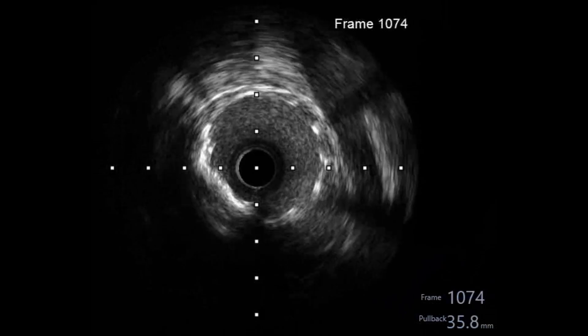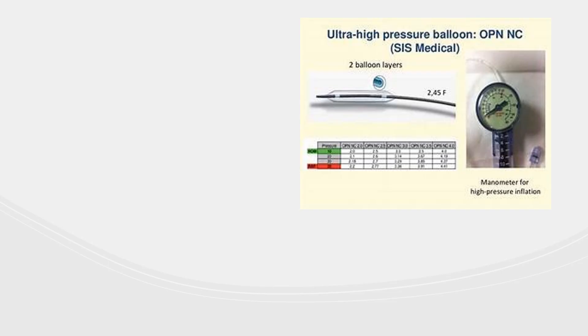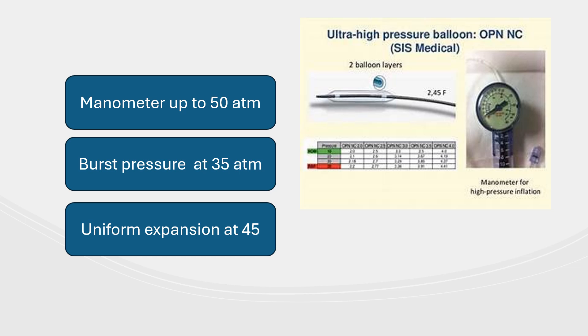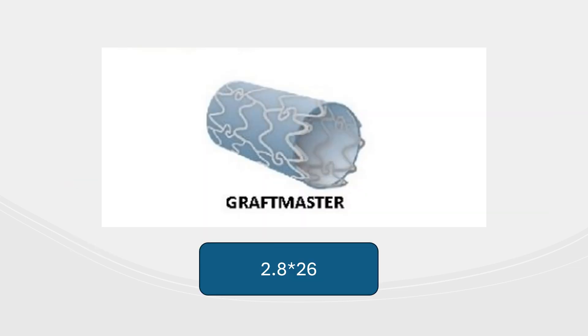So, what to do? We either accept the result with higher risk of both stent thrombosis and restenosis, or go to higher pressure risking perforation. We decided to take the chance of higher pressure inflation. The OPN inflator can reach up to 50 atmospheres, and at the burst pressure of 35 atmospheres it has uniform expansion. At the same time, we prepared a graft master stent in anticipation of significant perforation, deciding to use it right away if perforation was significant.